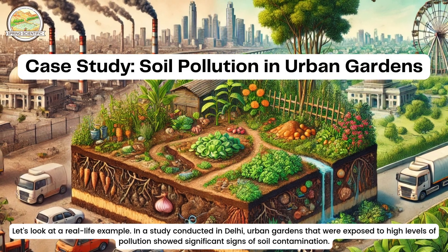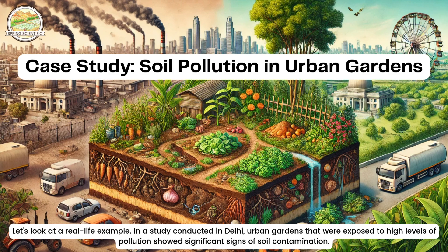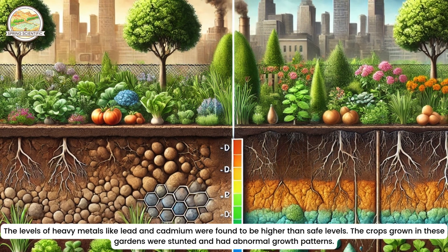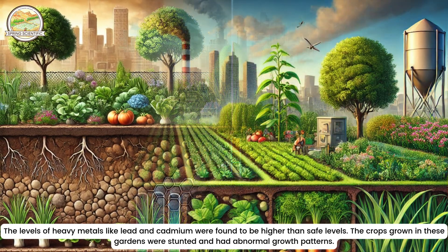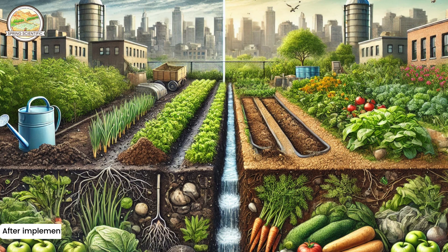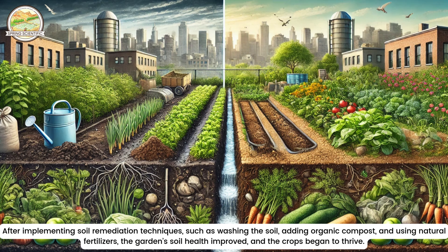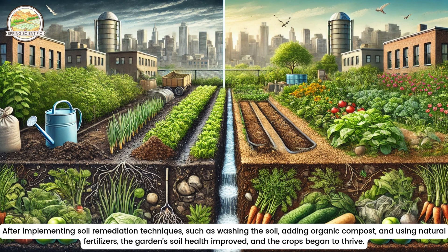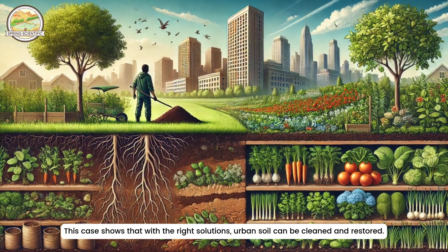Let's look at a real-life example. In a study conducted in Delhi, urban gardens exposed to high levels of pollution showed significant signs of soil contamination. The levels of heavy metals like lead and cadmium were found to be higher than safe levels, and the crops grown in these gardens were stunted with abnormal growth patterns. After implementing soil remediation techniques — such as washing the soil, adding organic compost and using natural fertilizers — the garden's soil health improved and the crops began to thrive. This case shows that with the right solutions, urban soil can be cleaned and restored.